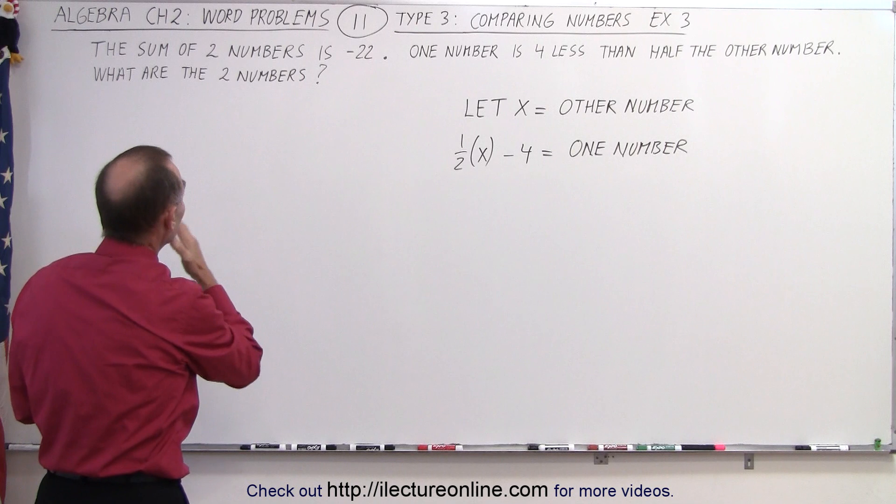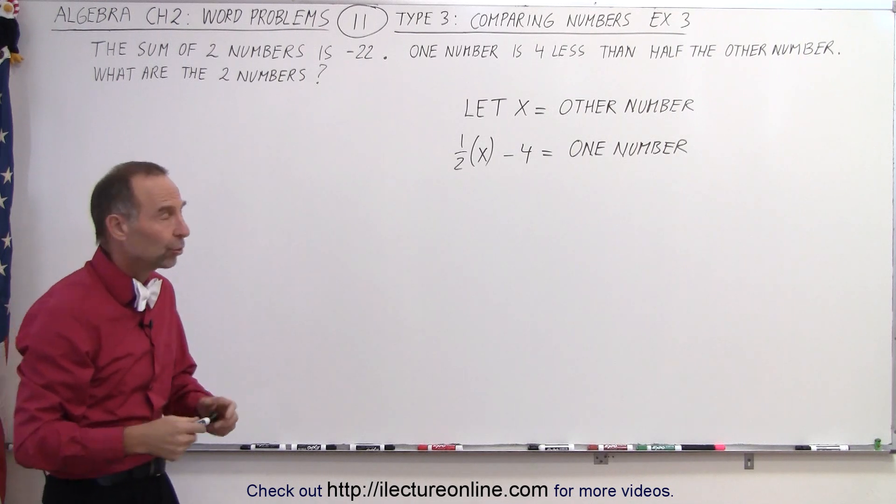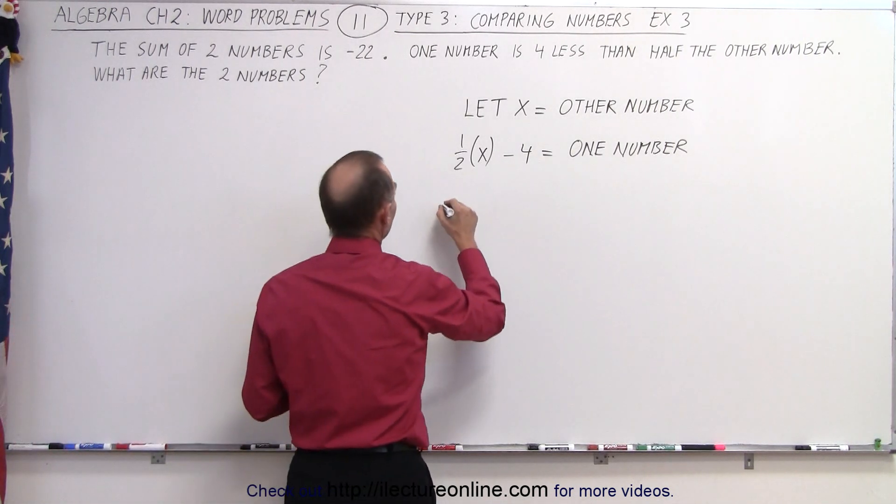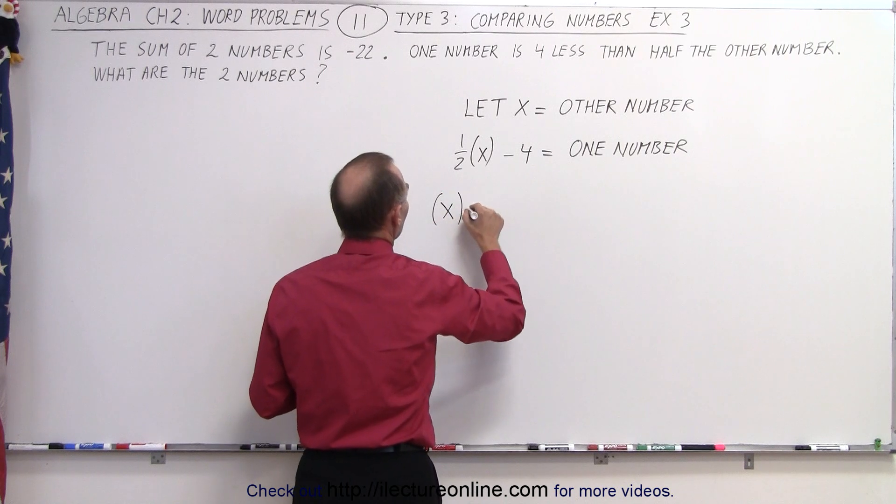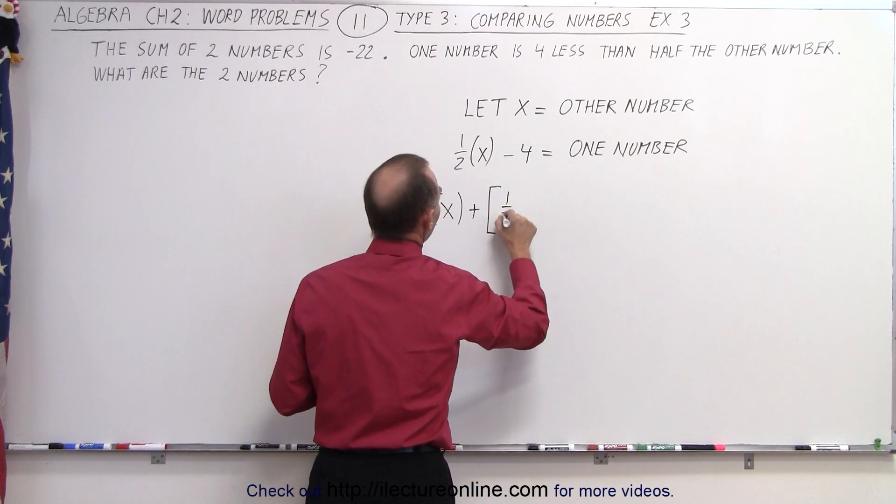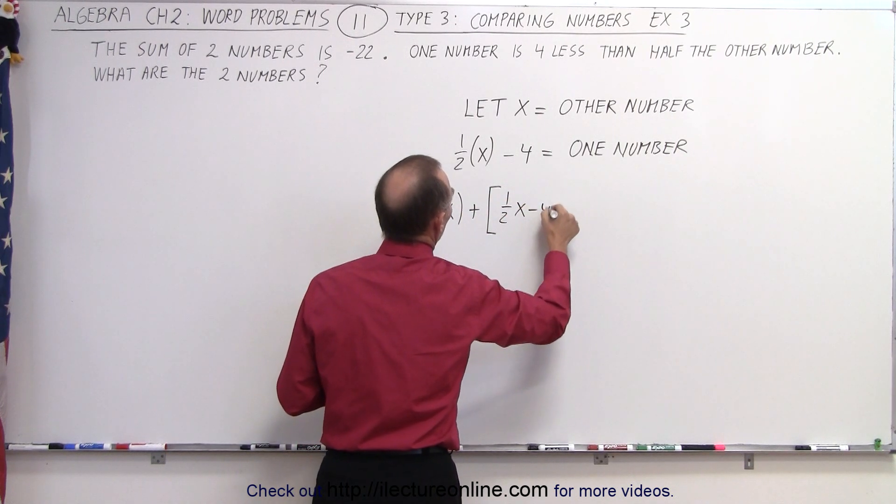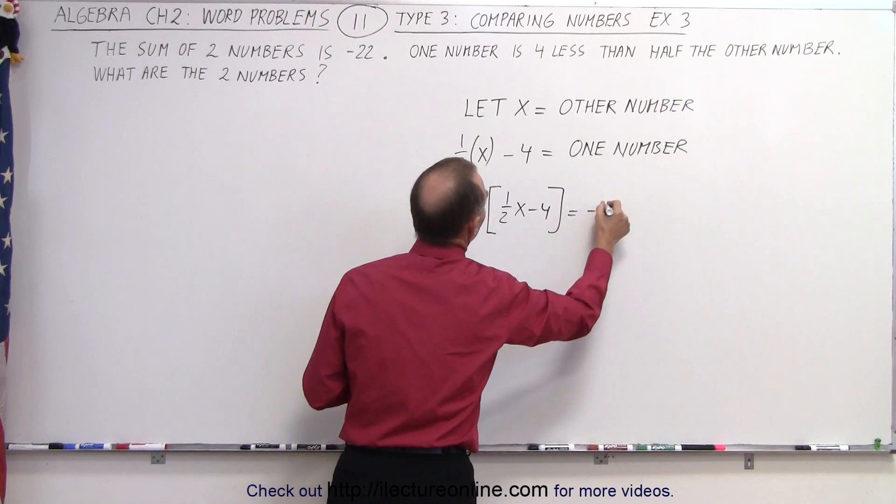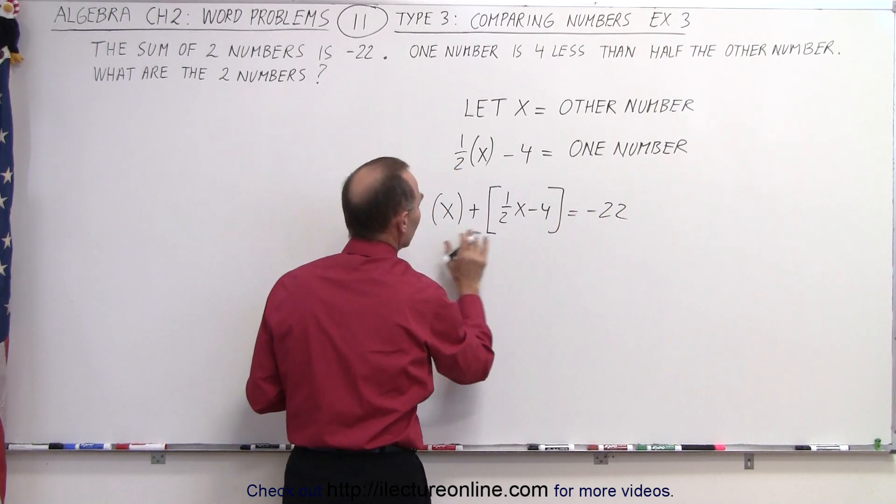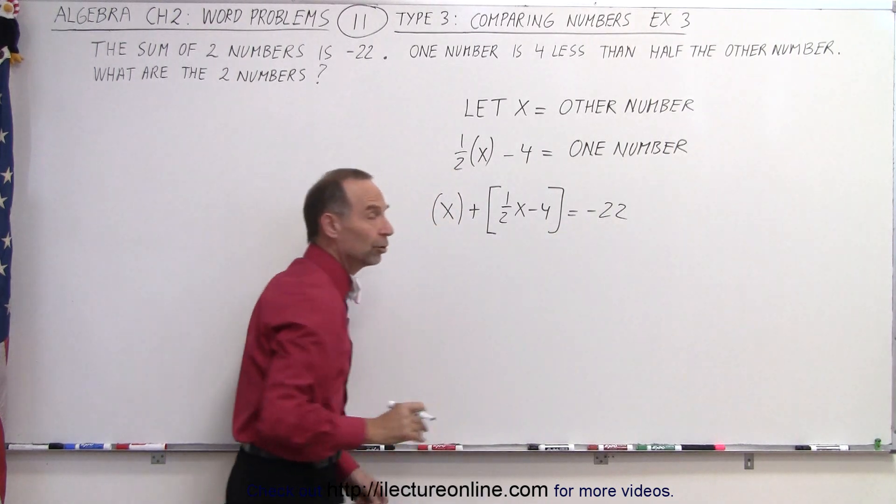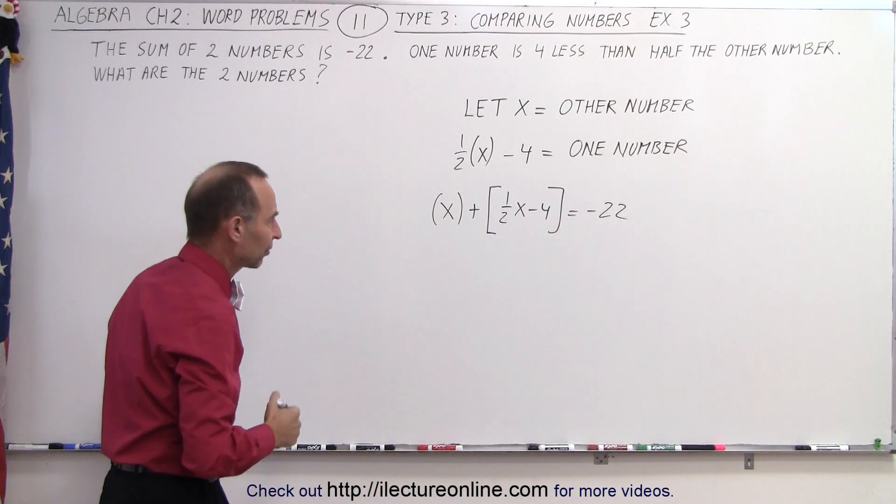Now, they tell us that the sum of the two is equal to minus 22, which means that x plus one half x minus 4 is equal to minus 22. So there's the equation. The sum of the two equals negative 22. And now we can solve for x.